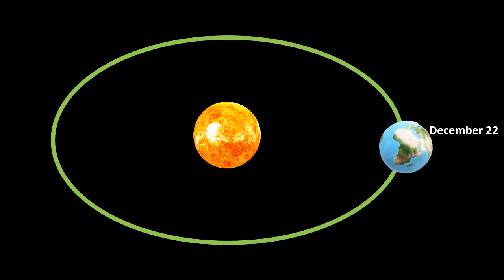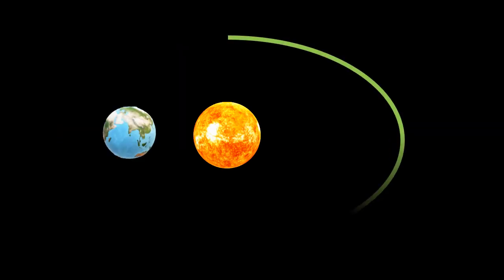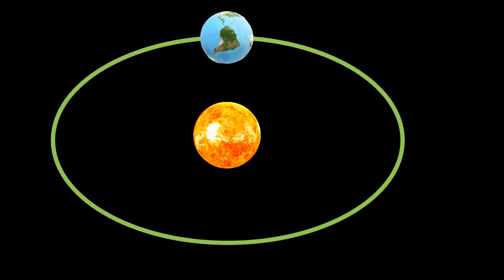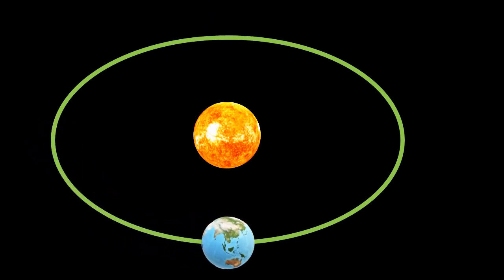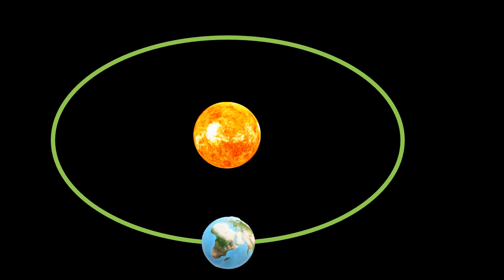It takes nearly 365 days — one year — to move around the Sun, and in a leap year we have 366 days. As the Sun appears vertically overhead at noon on the equator on March 21st and September 23rd, the length of day and night are equal all over the world on these two days. Hence these two days are known as equinox.